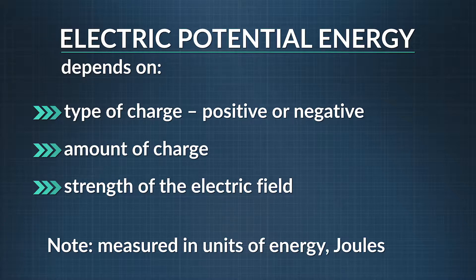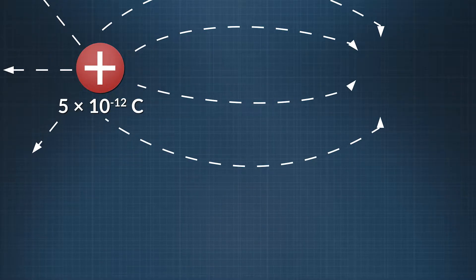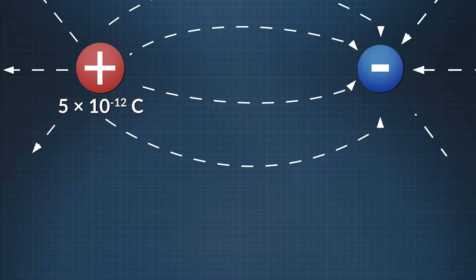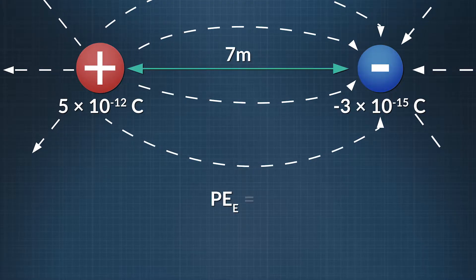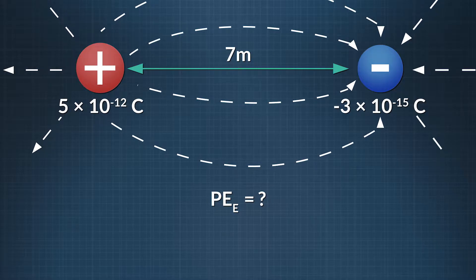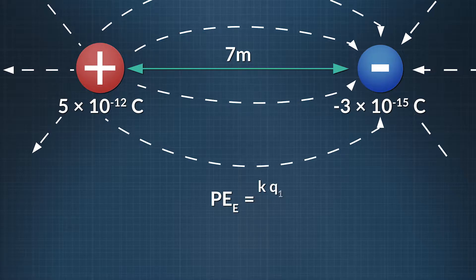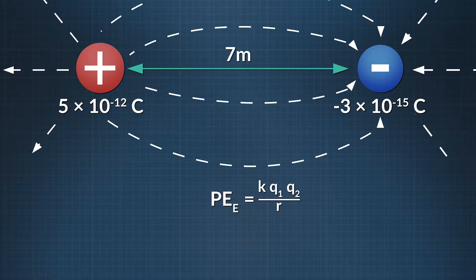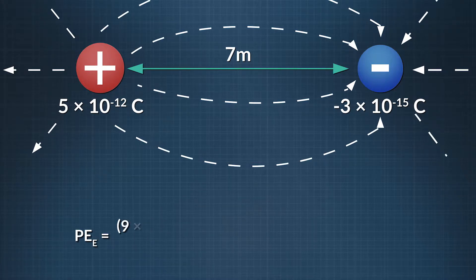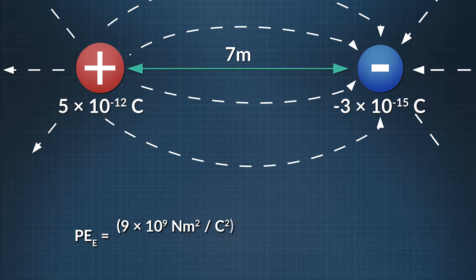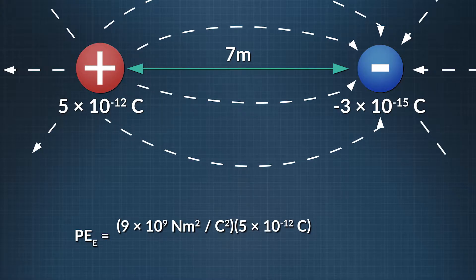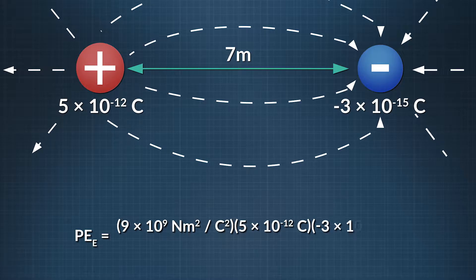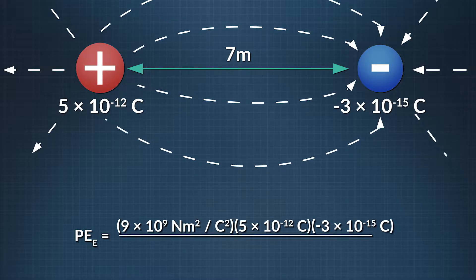Let's do a quick calculation to see how that works. Say you have a charge of positive 5 times 10 to the negative 12 coulombs creating an electric field. If a second point charge of negative 3 times 10 to the negative 15 coulombs is 7 meters away, what is the electric potential energy stored by the second charge? Electric potential energy equals the constant K times the product of the charges divided by the distance between them. Now we plug in what we know: K is 9 times 10 to the ninth newton meters squared per coulomb squared, multiplied by the first charge, positive 5 times 10 to the negative 12 coulombs, times the second charge, negative 3 times 10 to the negative 15 coulombs, divided by a distance of 7 meters.